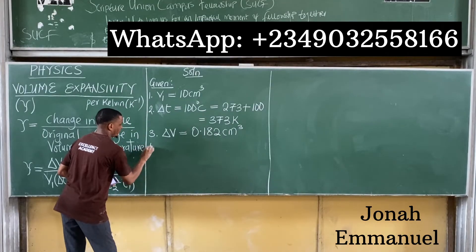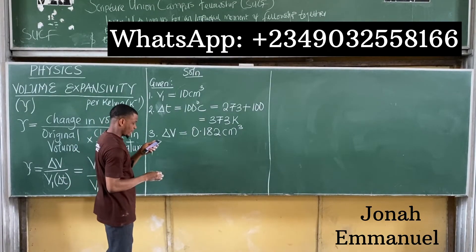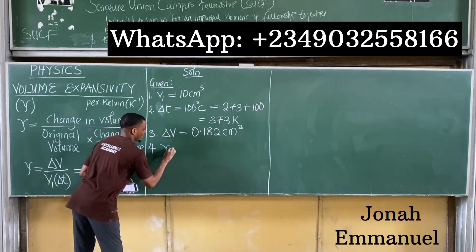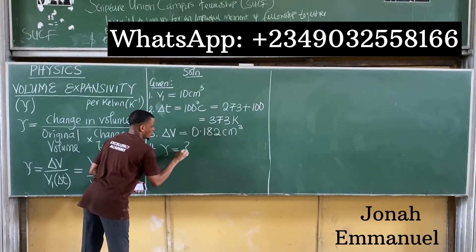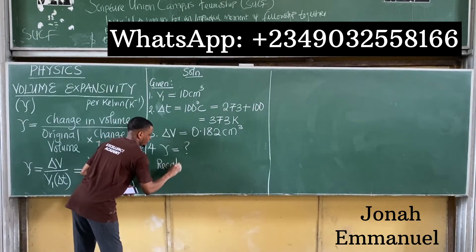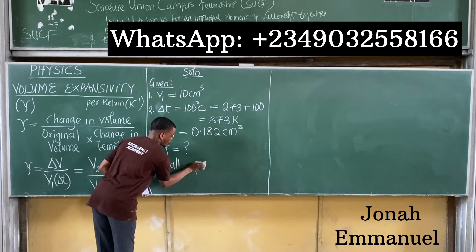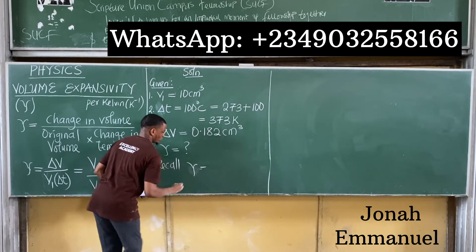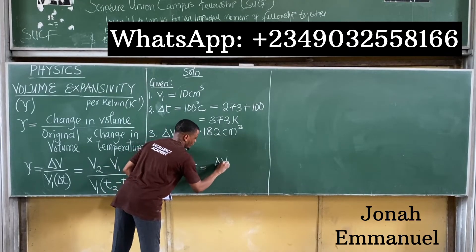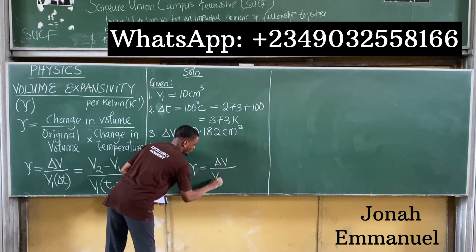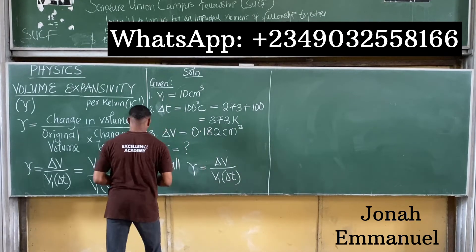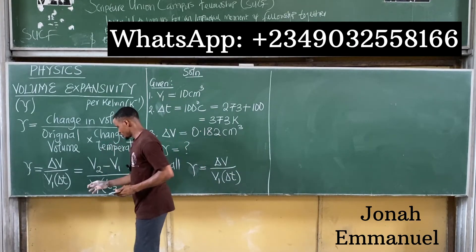We are asked to find the cubic expansivity γ. Recall the formula: γ equals change in volume ΔV divided by V1 times the change in temperature ΔT.